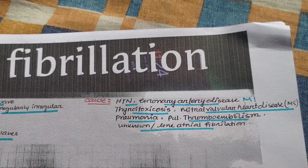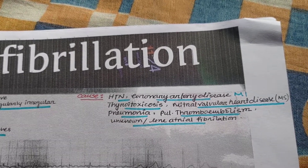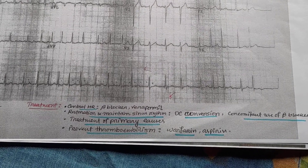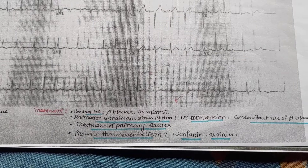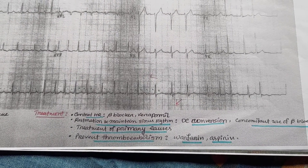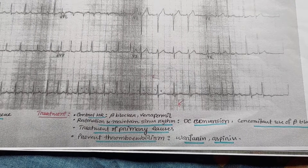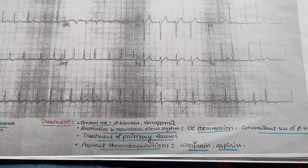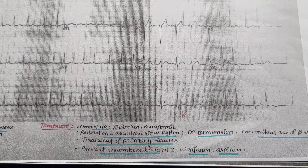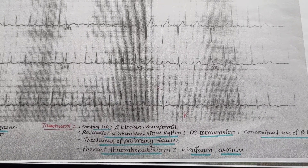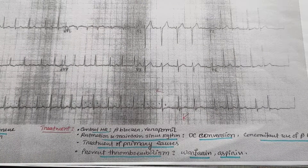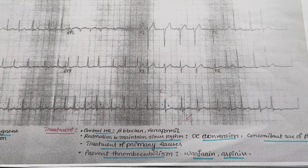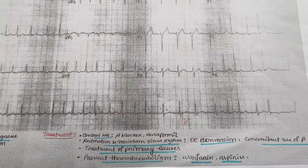If you want to know the causes of this disease, you will be able to manage the disease. If you want to control heart rate, you will use beta blockers. Then restore and maintain sinus rhythm. And what do you want to do? DC shock or DC cardioversion. Then treatment of primary causes — when you have thyroid toxicosis, pneumonia, this is the treatment. You will prevent thromboembolism by warfarin and aspirin.